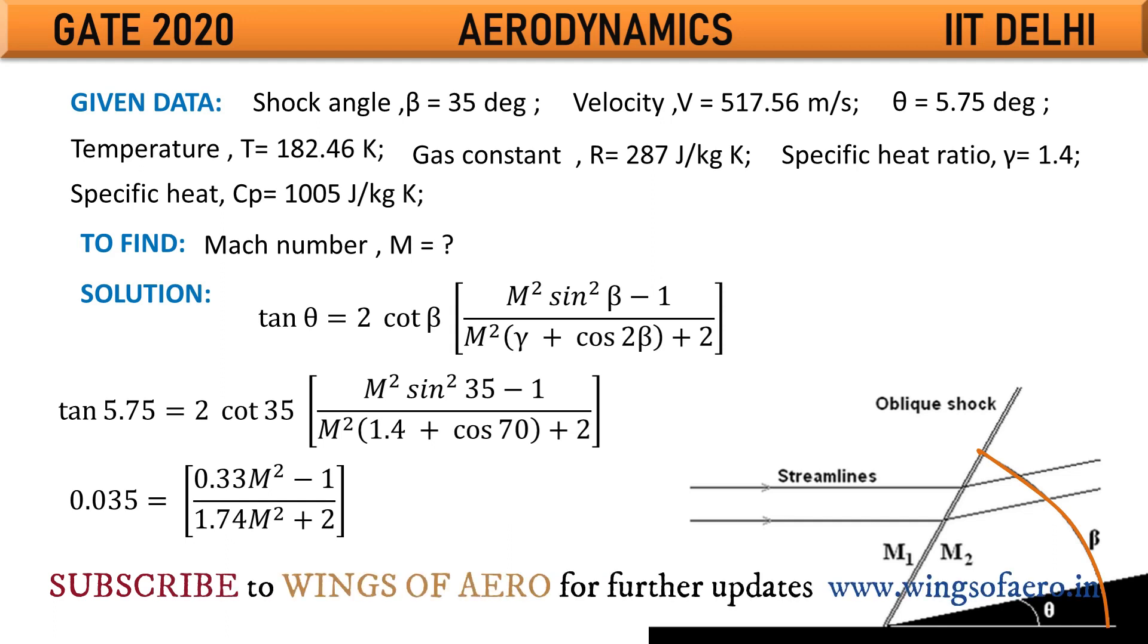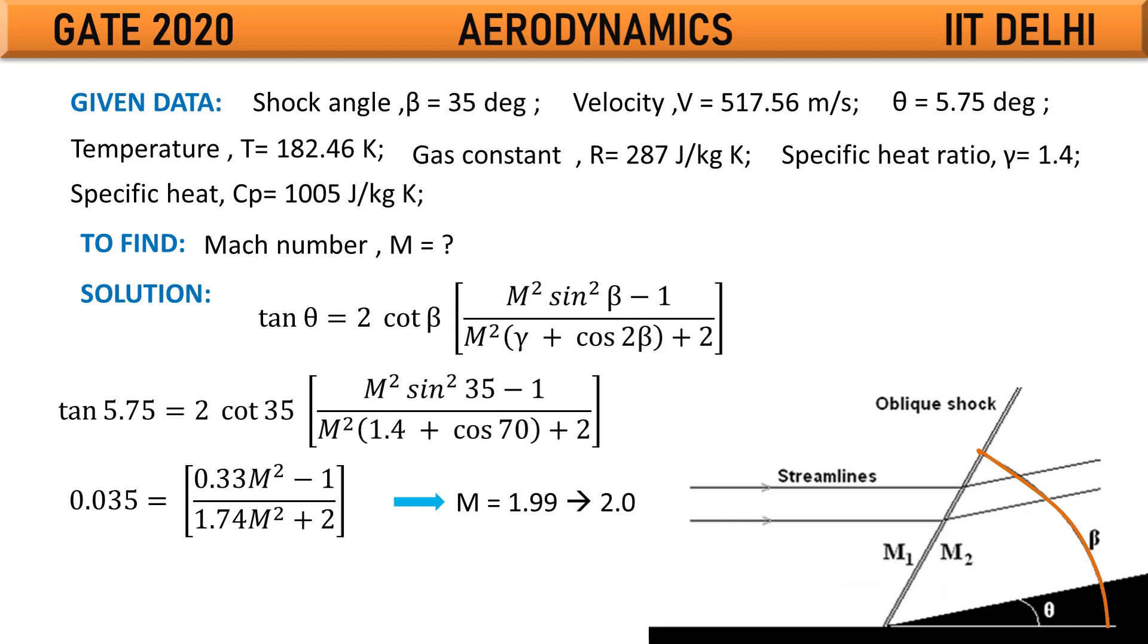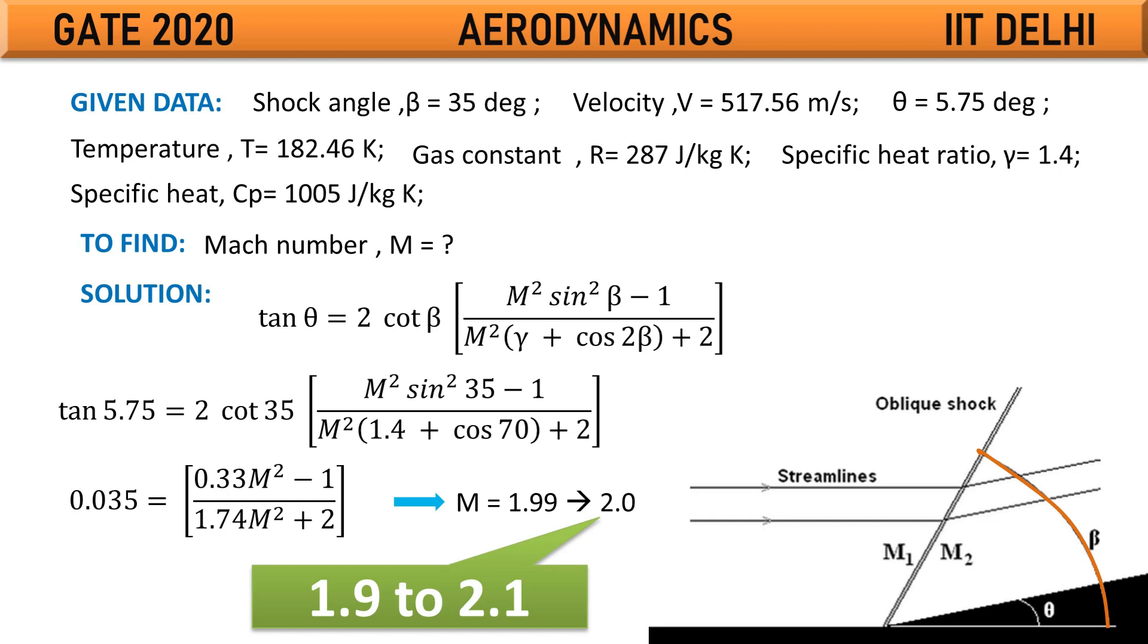After resolving the Mach number, we get Mach number about 1.99. We can round off to one decimal place, that is Mach number becomes 2.0. As per the answer key given by IIT Delhi, it is about 1.9 to 2.1 which is the advisable range.